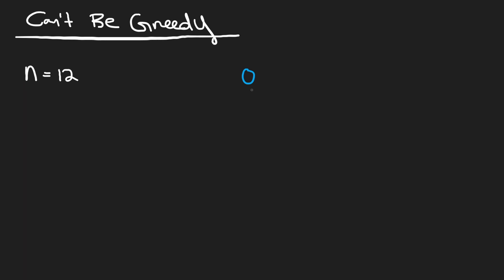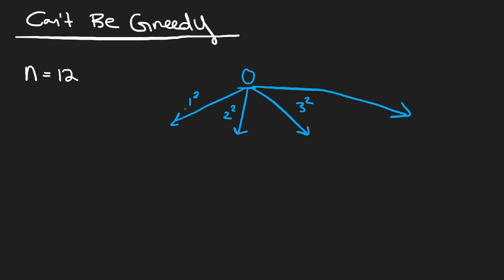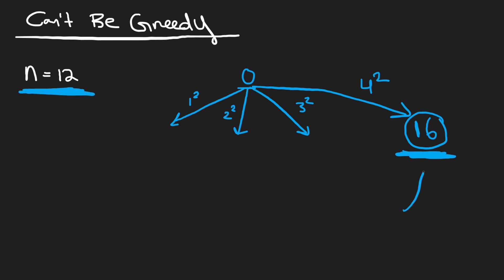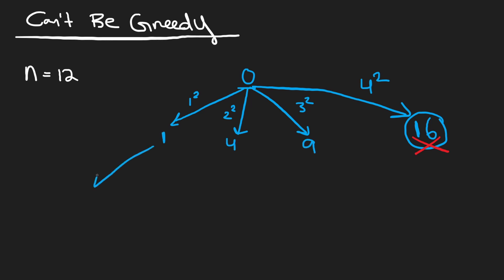Let's say we start out with our sum being 0 — we want our sum to reach 12. We have a few branches we can take: we can start with 1 squared, 2 squared, or 3 squared, and we just keep going sequentially until we hit 4 squared which is 16. That's greater than 12, so that's too large and we stop that branch immediately. The other branches give us sums of 1, 4, and 9.